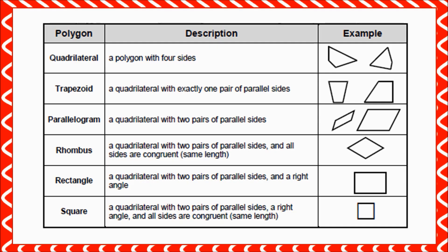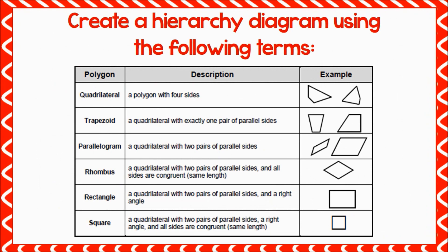In fifth grade, the standard calls for students to reason about the attributes of shapes. Students are expected to examine questions such as: Why can't trapezoids and kites be classified as parallelograms? Which quadrilaterals have opposite angles congruent? This standard also calls for students to build on prior knowledge of figures that have parallel sides, figures that have perpendicular sides, and figures that have both parallel and perpendicular sides, and to categorize these figures into a hierarchy based on their attributes.